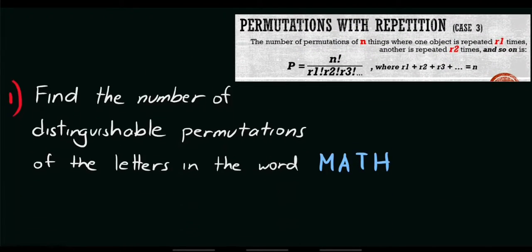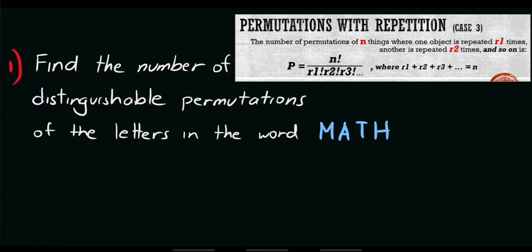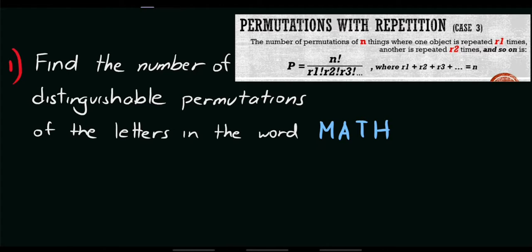Let's try to answer the given problems. Number 1: find the number of distinguishable permutations of the letters in the word MATH. Our first step is to count the number of letters. Since we have M-A-T-H, we have 4 letters, so automatically we have 4 factorial.